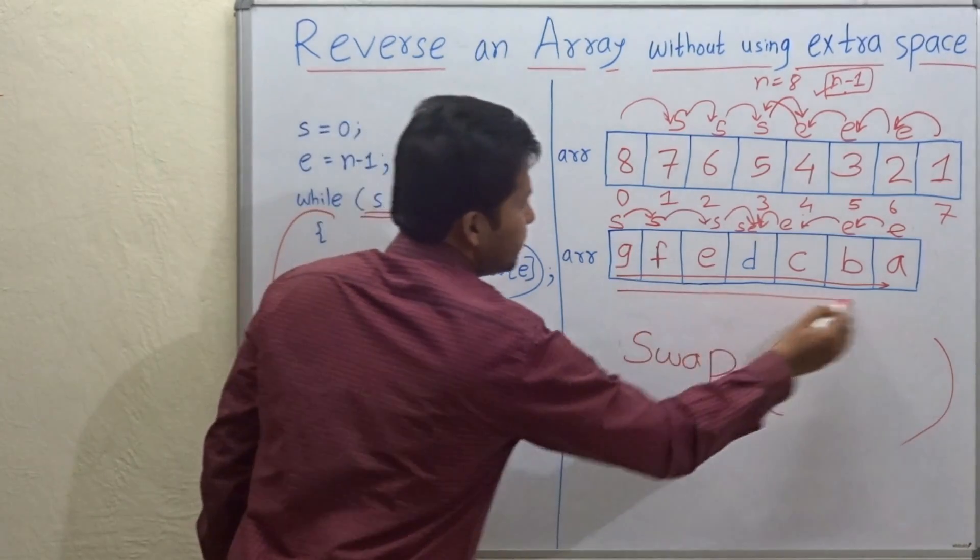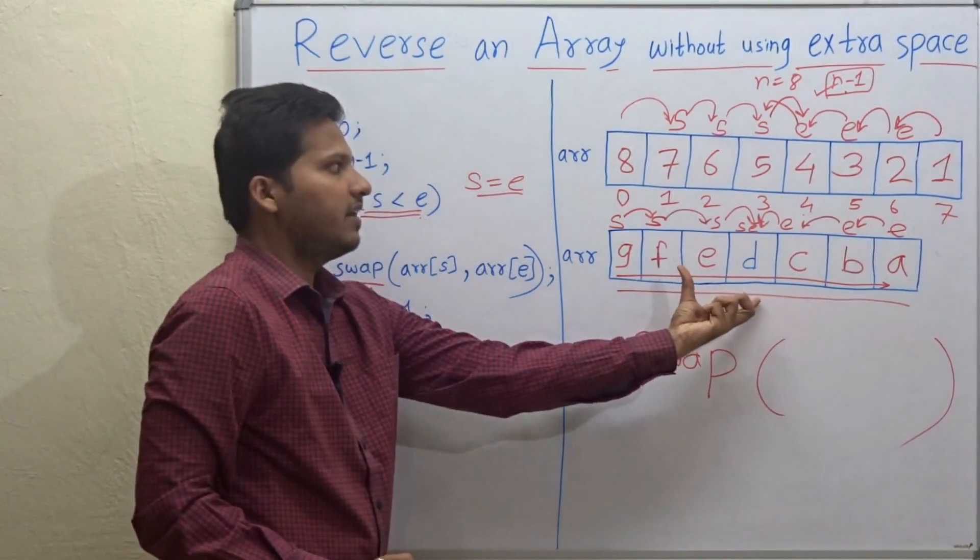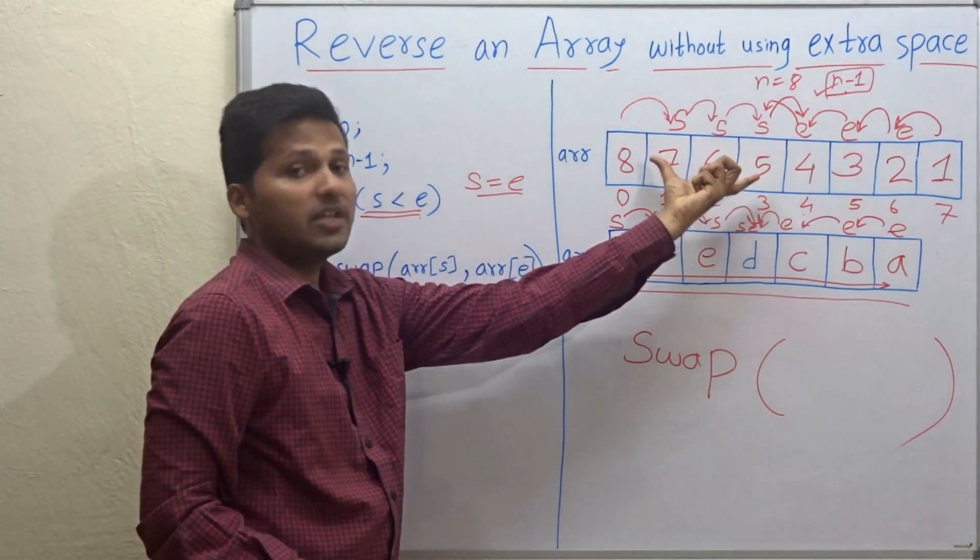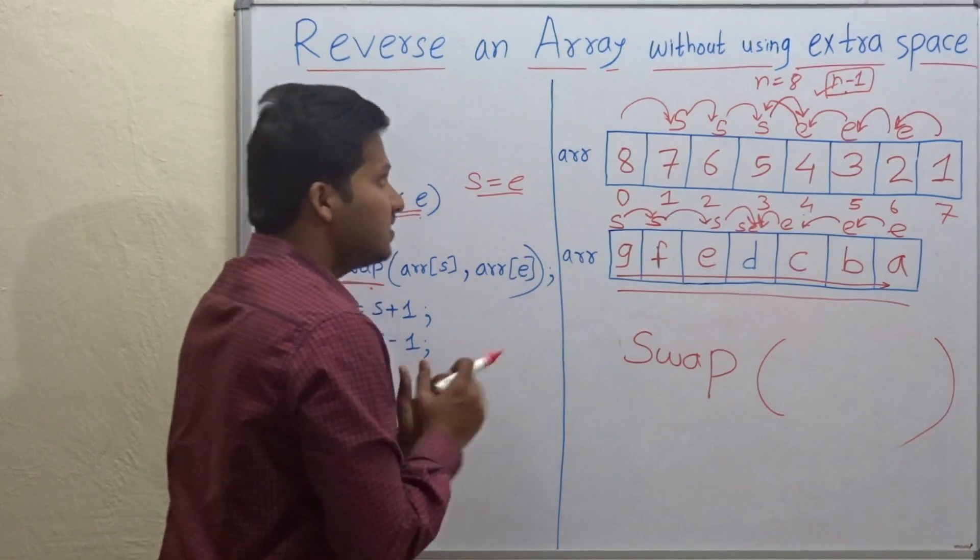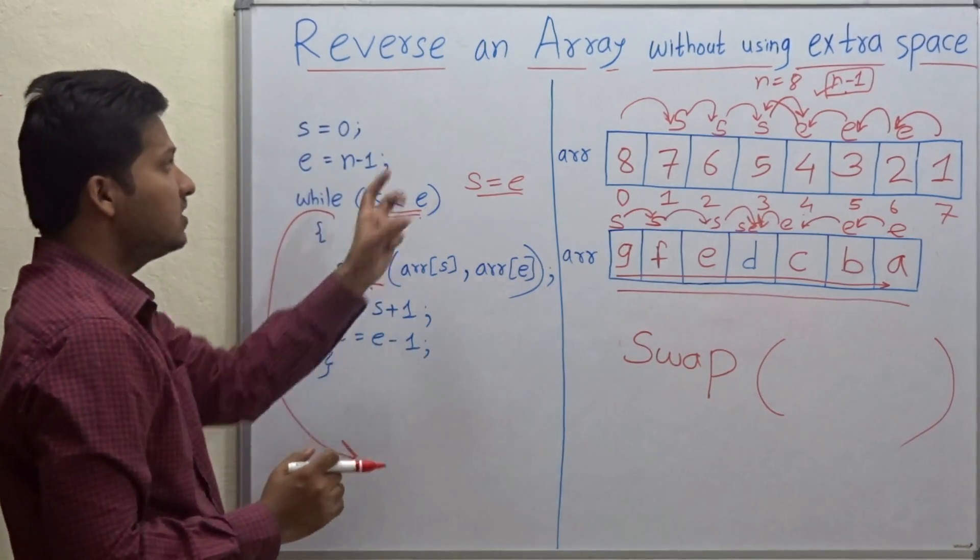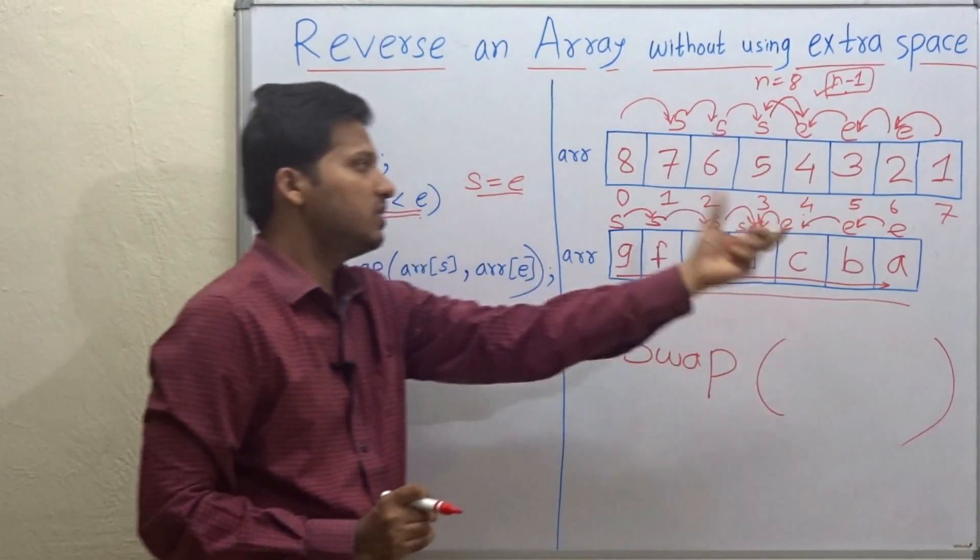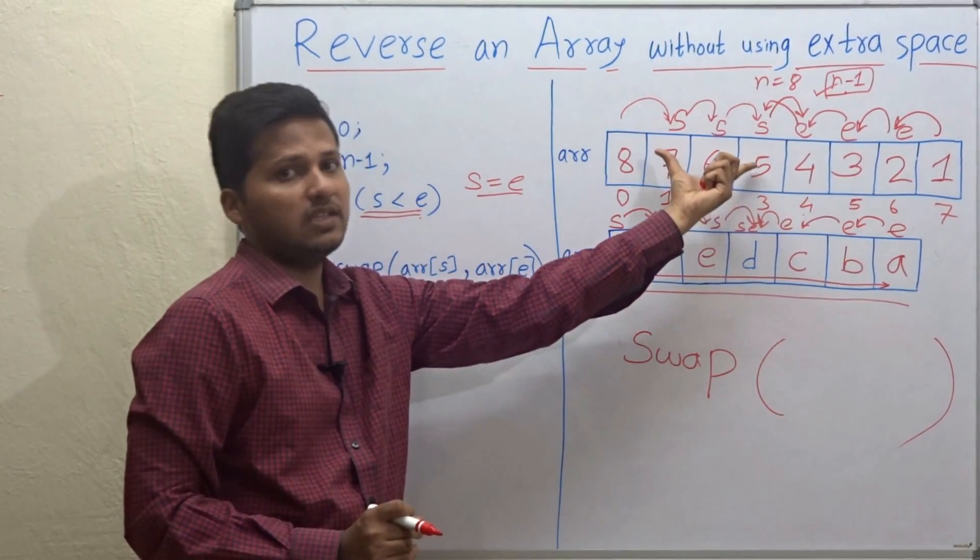And the final array which we get is the reversed array. This is also the reversed array. So this is how we reverse an array without using extra space. We didn't use any extra space here. We used that same array.